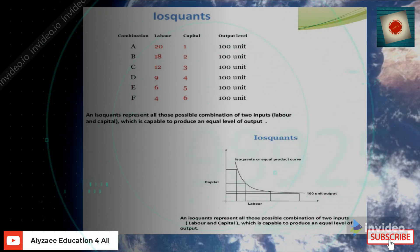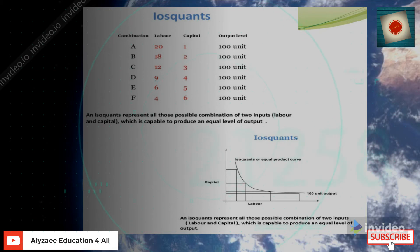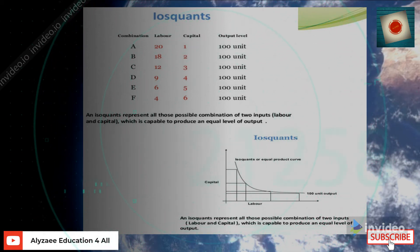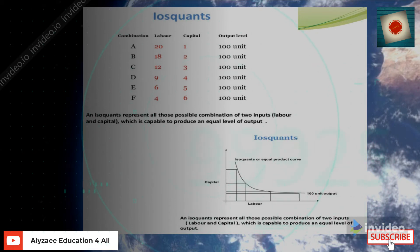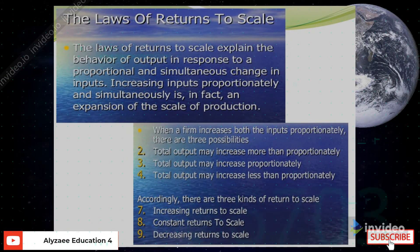Today, technology has overruled manual methods. For example, if you use an excavation machine, work that was hard to do in 3 hours can now be done quickly. So an isocost represents those possible combinations of labor and capital which are capable of producing an equal level of output.